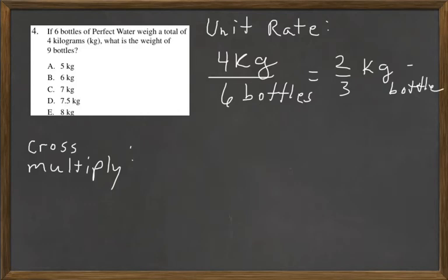That leaves us with two-thirds kilogram per bottle. Then we just take nine bottles and multiply that by two-thirds, and that gives us eighteen-thirds equal to six. This is a one over here.